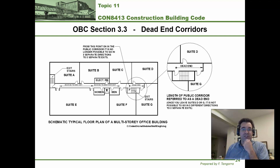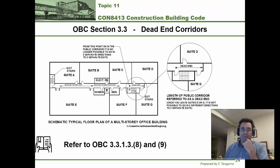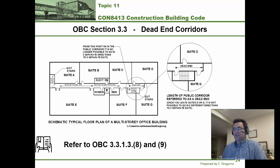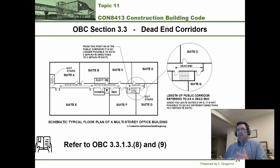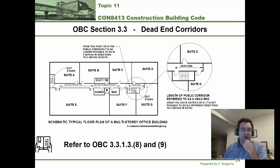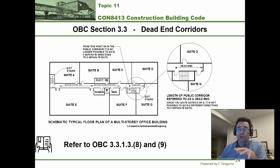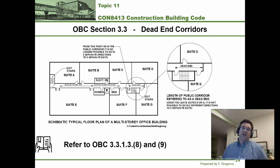What does the building code say about dead-end corridors? According to sentences 8 and 9 under Article 3.3.1.3, a dead-end corridor is a corridor that does not allow you to go in any direction to reach an exit. If you're in a corridor and you can't go in any direction and still reach an exit, it's a dead-end corridor.